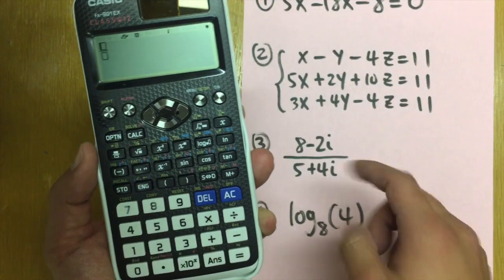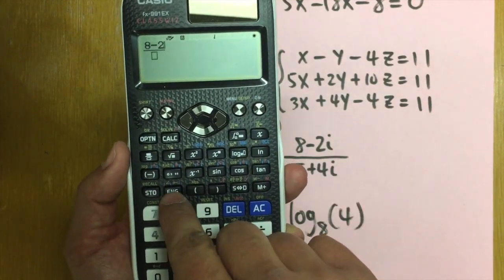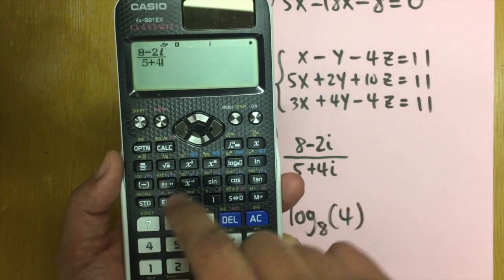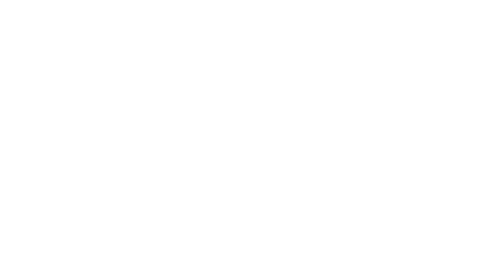Use the fraction key right here. And then let's just enter this. Eight minus two. Use this for the i. And then just go down. We have five plus four i. Enter. Look at this. Complex number in the a plus bi form, right?